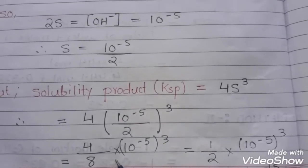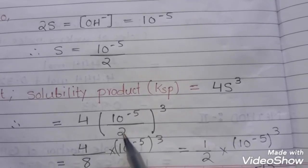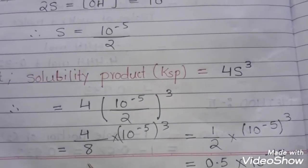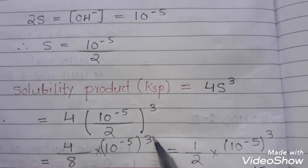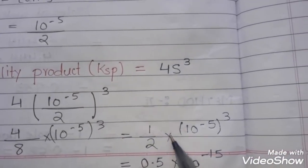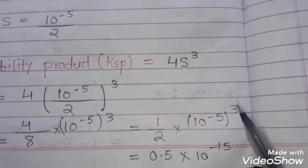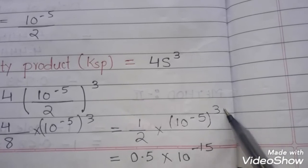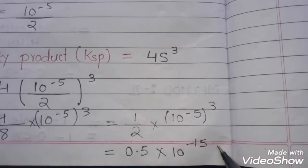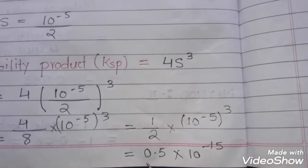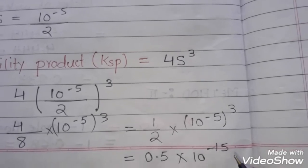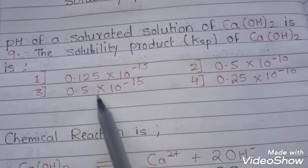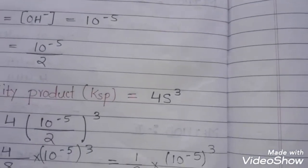Once we solve this, the 2 will become 8 when we do the 3-times multiplication of 2. So we have 4 divided by 8, which is one-half, outside the bracket, and this will become 10 raised to the power minus 5 to the power 3. Using the rule a raised to b raised to c equals a raised to b times c, we get 10 raised to minus 15. So the answer is 0.5 into 10 raised to minus 15. The correct option is option 3: 0.5 × 10⁻¹⁵.